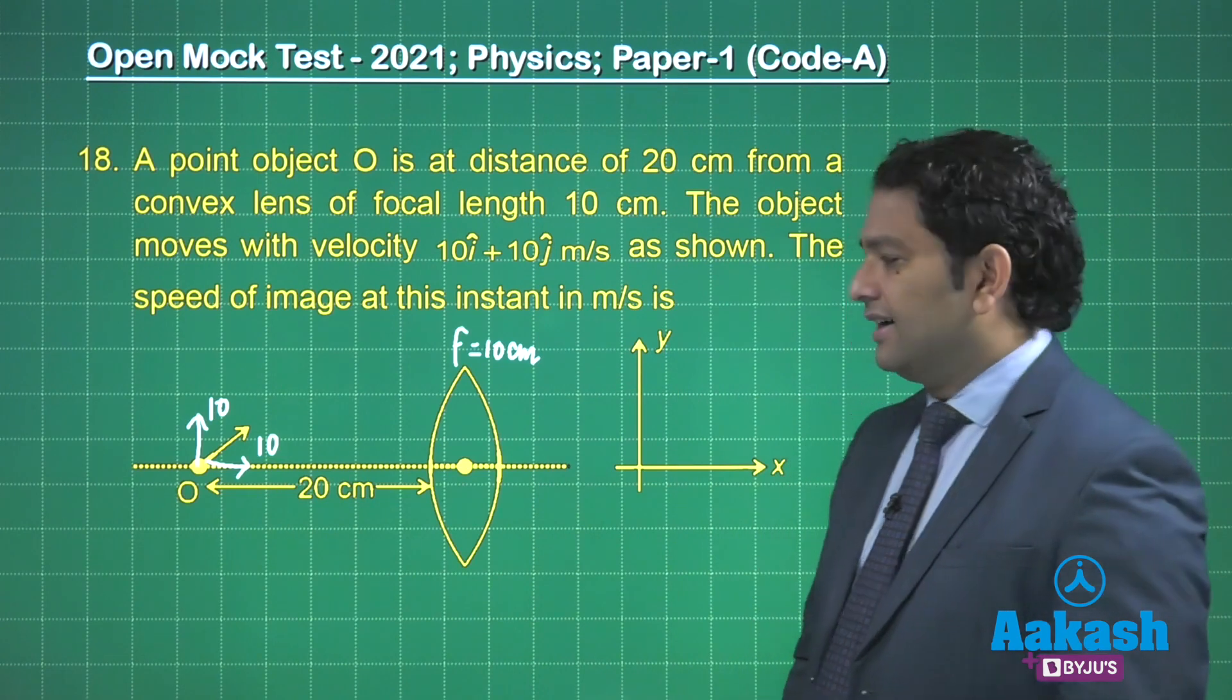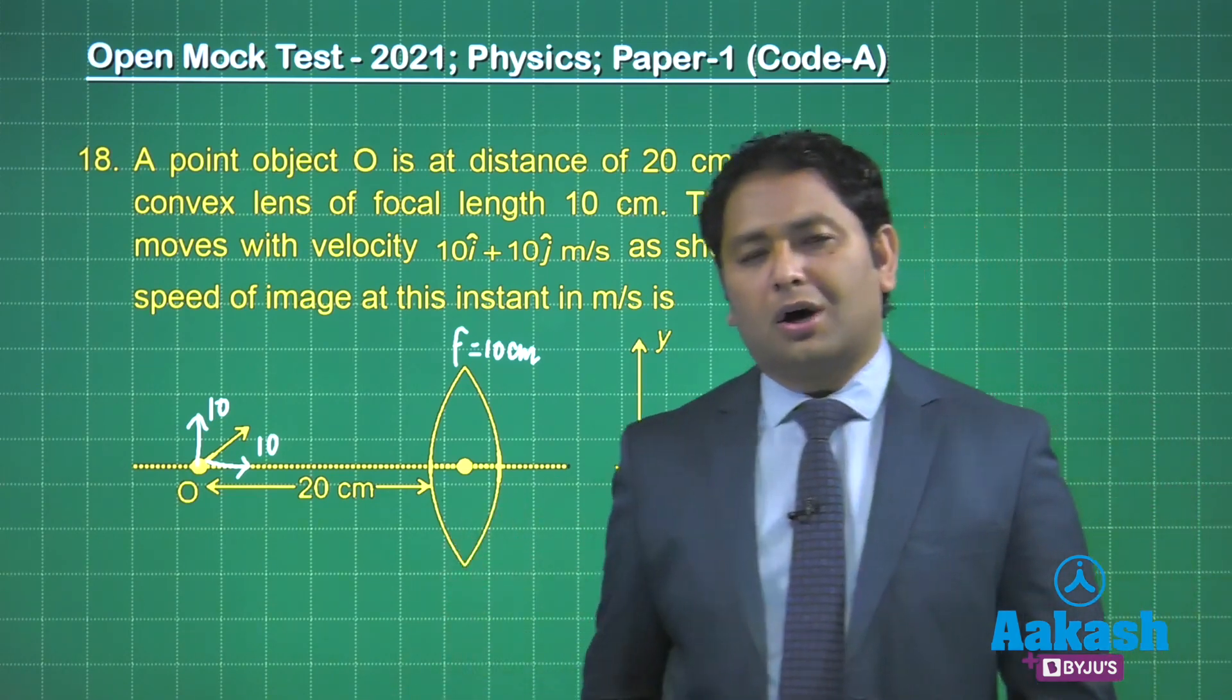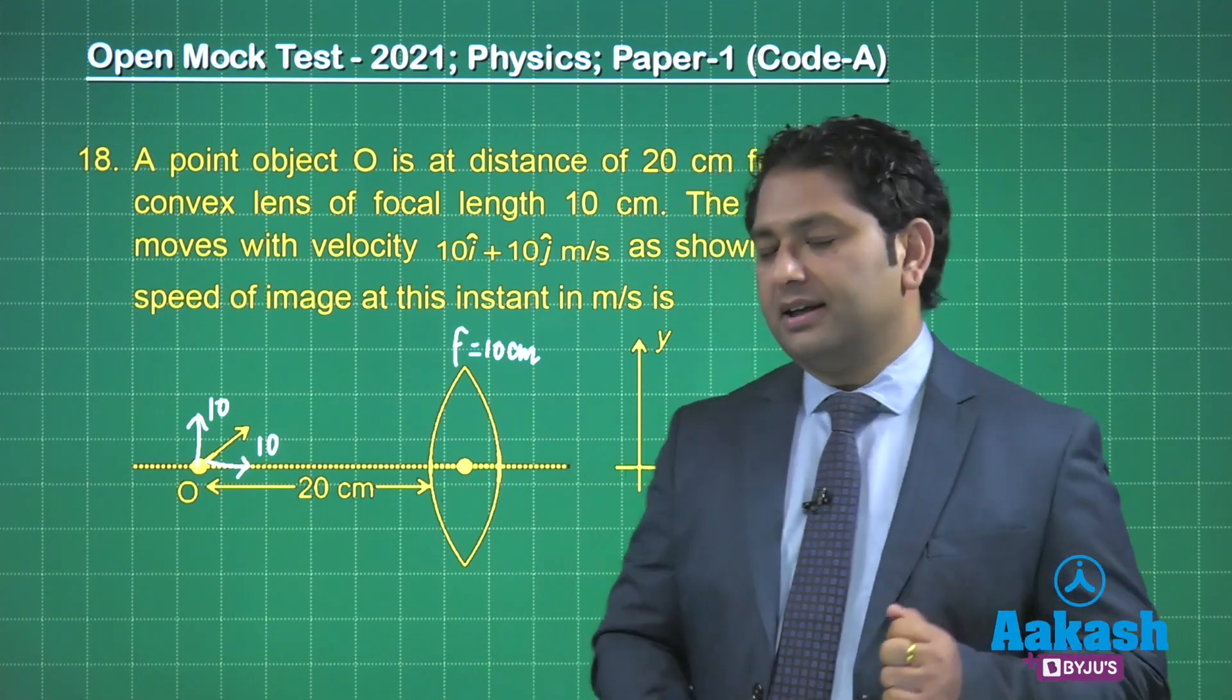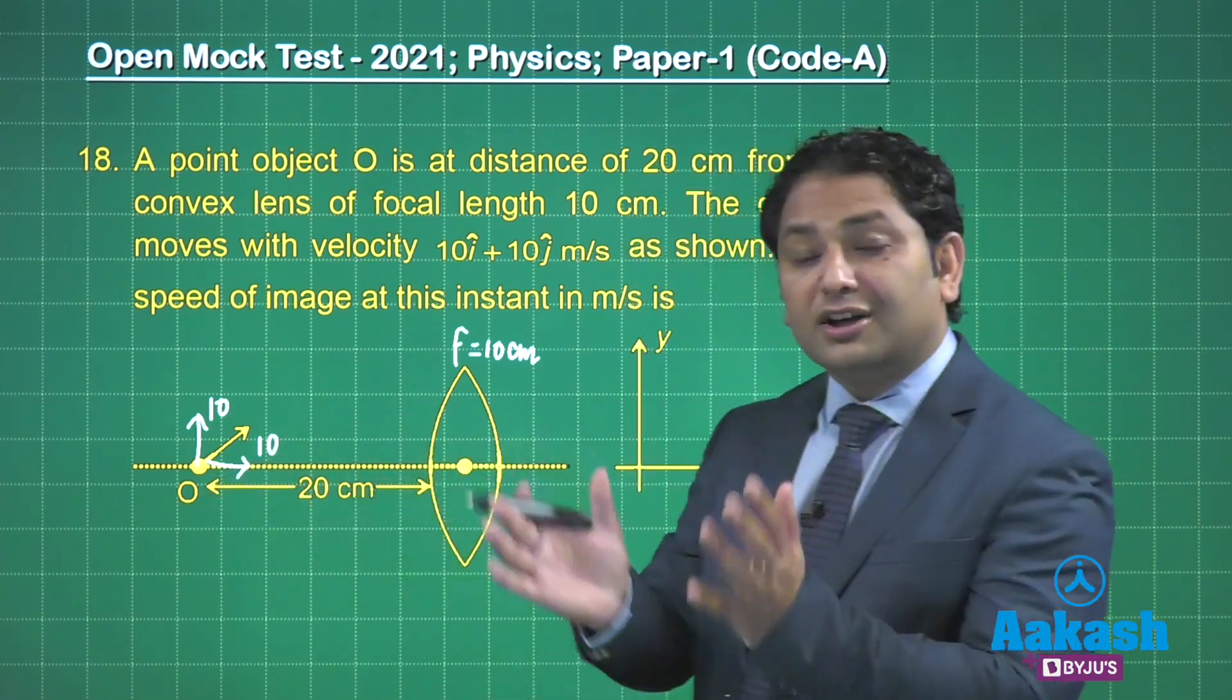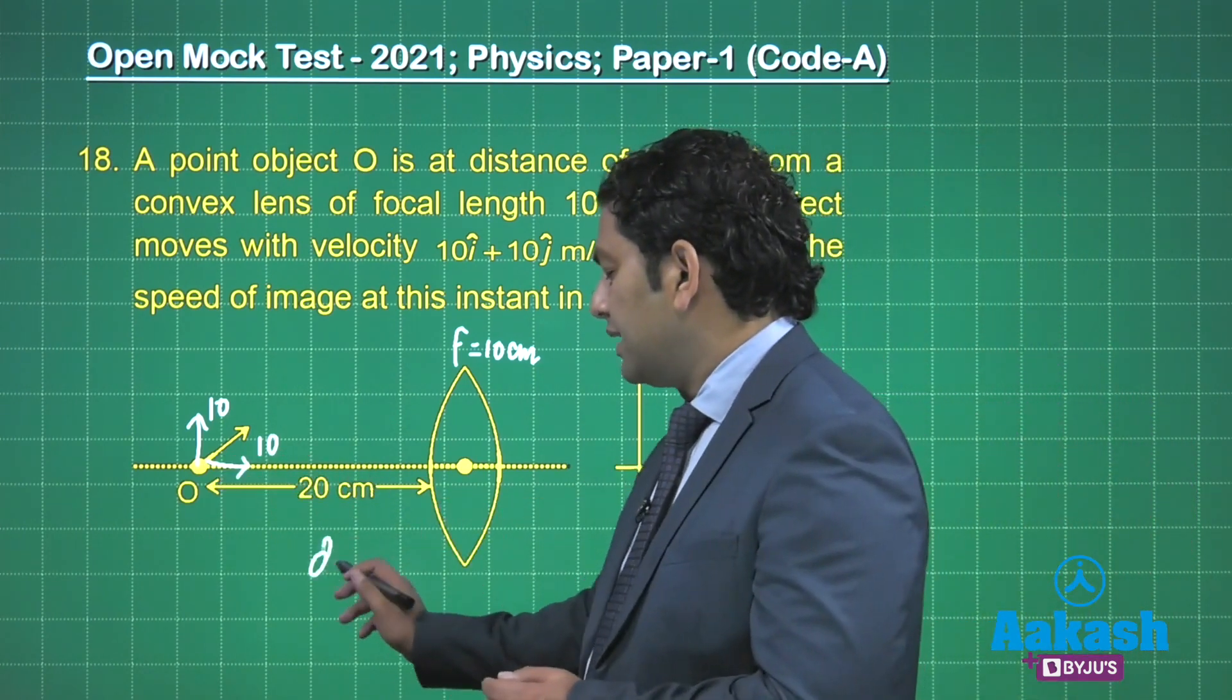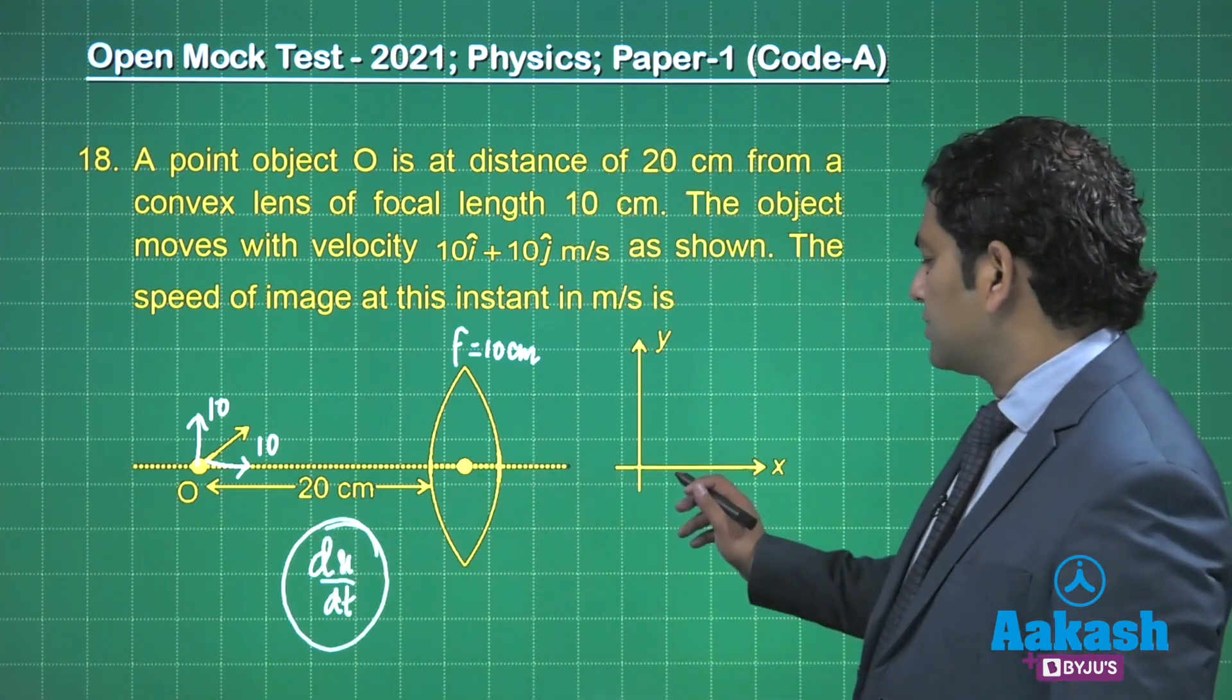Now there are two components of the speed of the object, right? Being precise, two components of the velocity of the object. So we need to handle the x component and the y component. How do we calculate the corresponding velocity of image? You know, the corresponding x component velocity, how do we do that? The x component velocity is rate of change of object distance. And you know when the object is at 2f, the image will be at 2f, right?